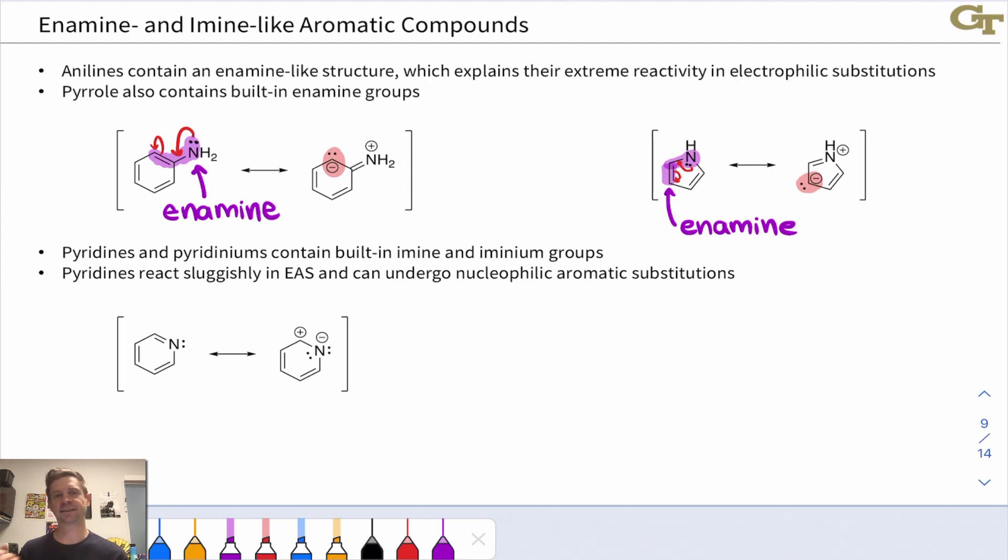The exact same type of electron flow is going on there. In even more complicated heterocycles—bicyclic heterocycles, fused aromatic heterocycles—you see the same kind of electron flow being extremely important for understanding the distribution of electrons in that structure and how it's going to react. For example, this reacting as a nucleophile should make perfect sense if you can spot the embedded enamine in this structure.